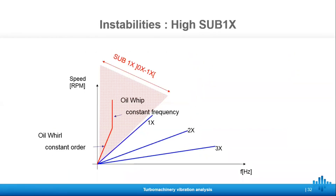Going back to the high sub-1x: in red is the area where we compute the energy for the sub-1x, and this red line clearly shows the two stages mentioned before. As soon as the oil whirl at the low order crosses the natural frequency of the shaft, we will get the oil whip. So we have two phenomena — one linked to the order and the other linked to the frequency. This is why the sub-1x is relevant: we don't need to track one frequency and one order, we only need to look at the trend.